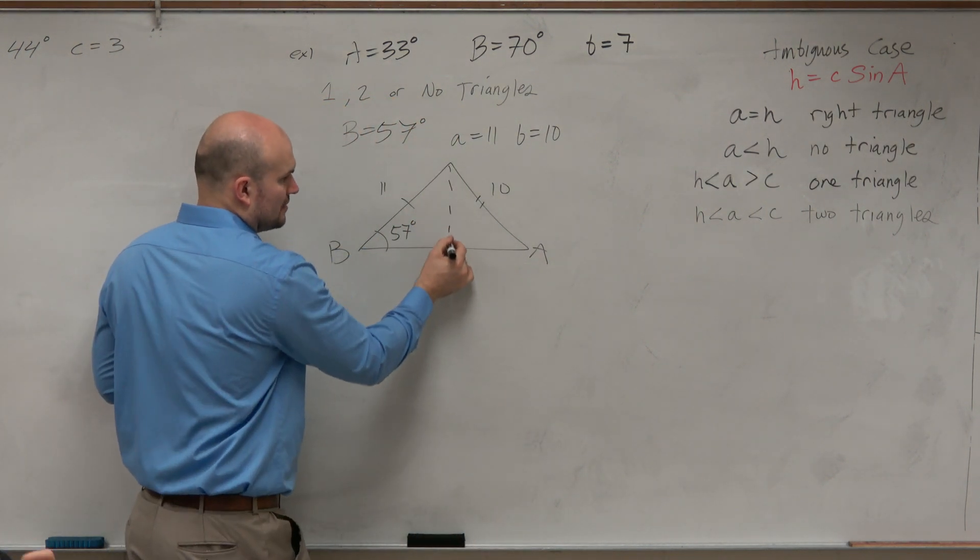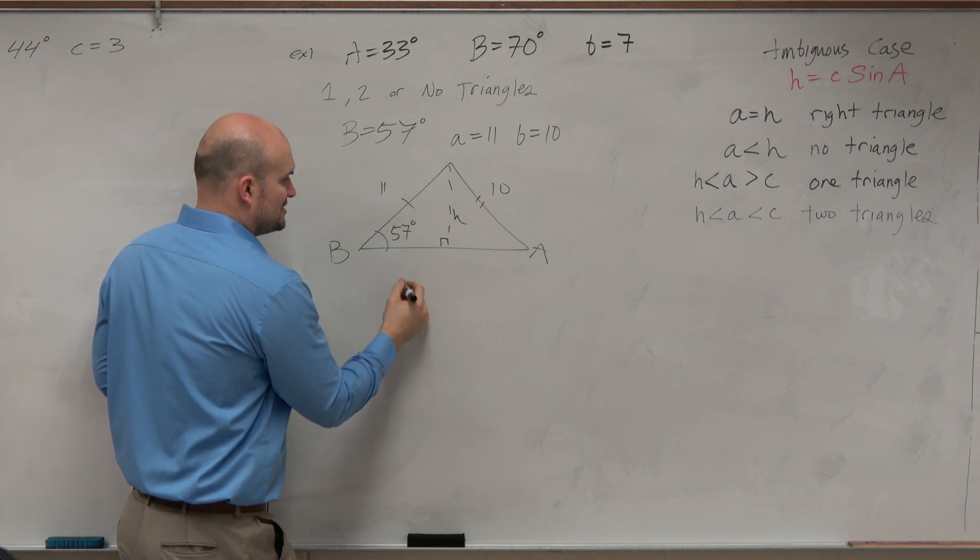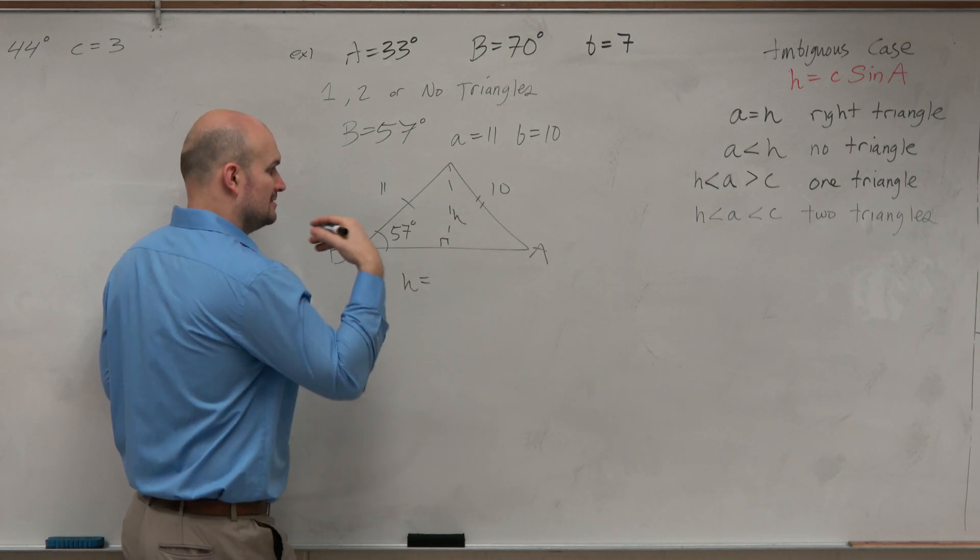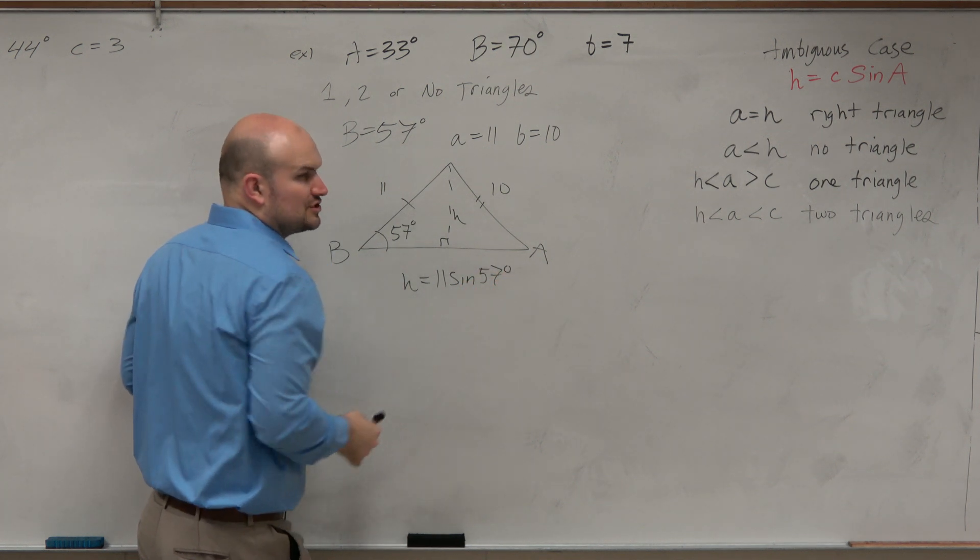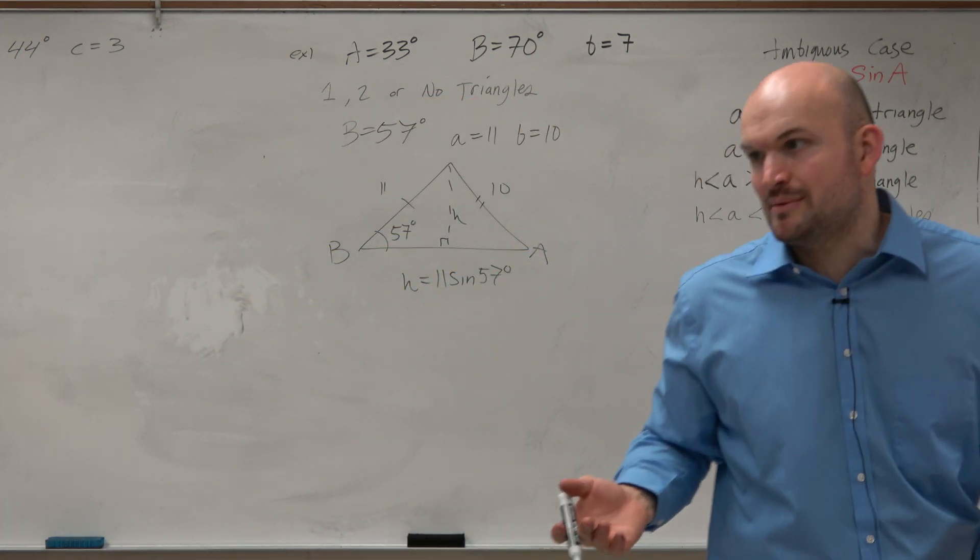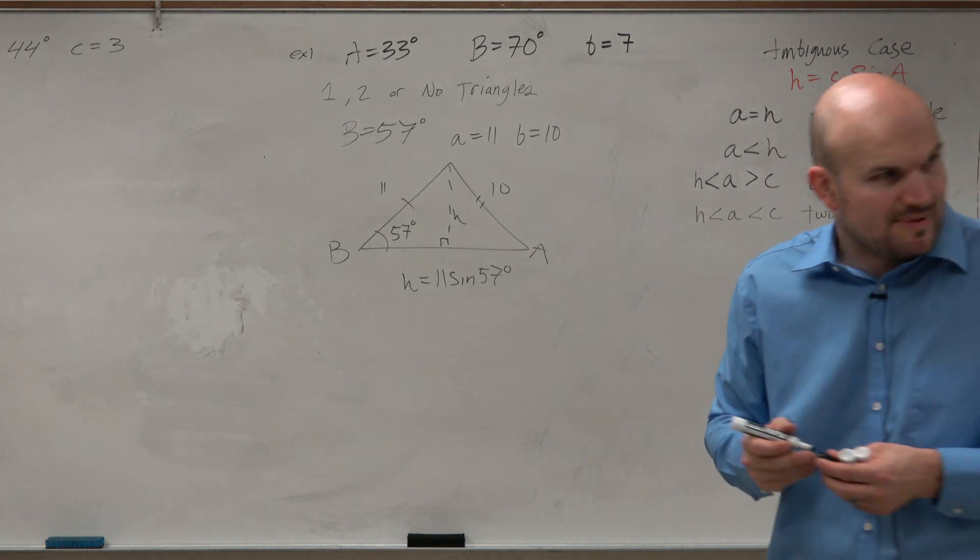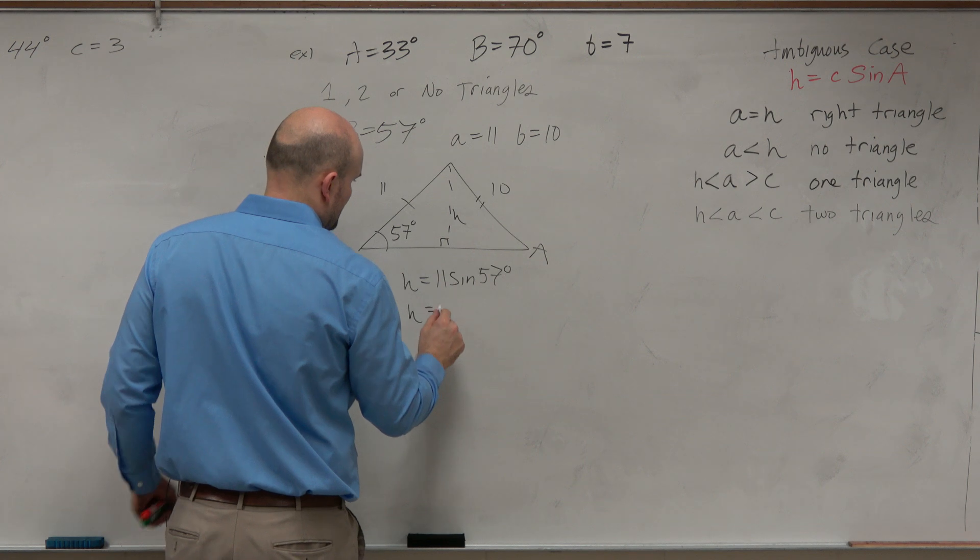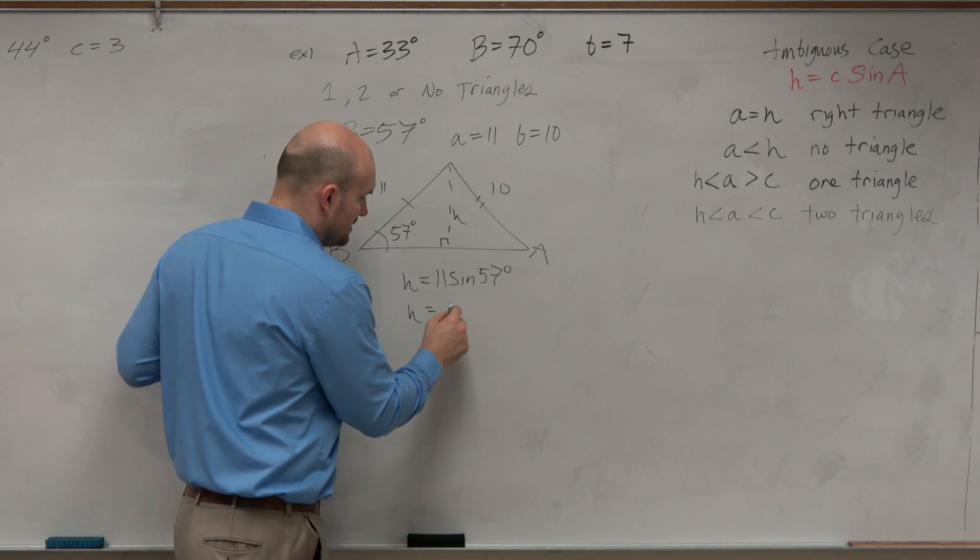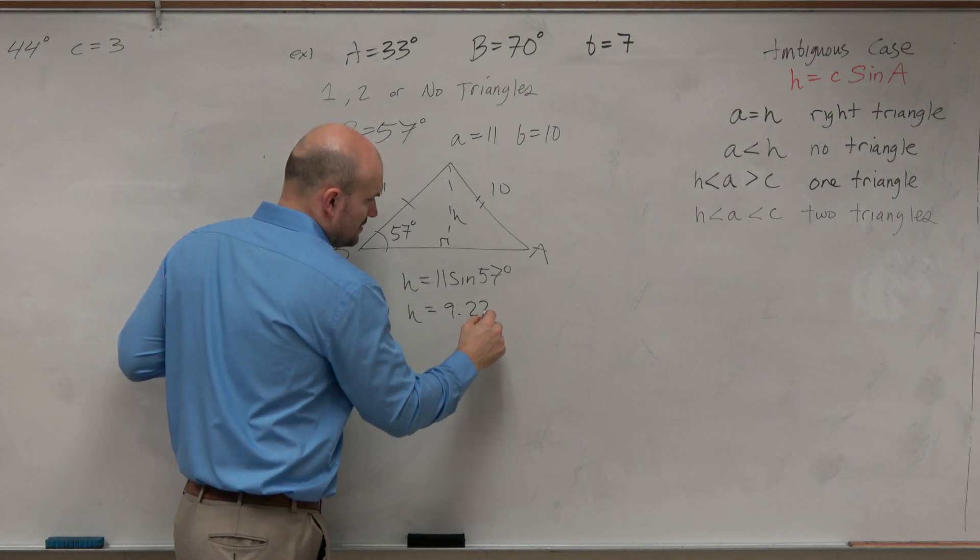If we want to figure out H, then we just say H is equal to 11 times the sine of 57. So I don't want you guys to have to keep on memorizing this, because it's not memorized. If you keep on doing it, you're like, OK, I'm getting this pattern. I'm getting this. So we do this, and we get H to be 9.225.